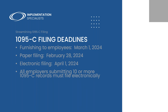The 1095-C filing deadlines for the 2023 tax year are quickly approaching. To furnish them to employees, the deadline is March 1st. Paper filing is due very shortly, and electronic filing is by April 1st — so you've got a little over a month there. The threshold mandating electronic rather than paper filing continues to drop: for the 2023 tax year, if you have to file 10 or more 1095-C records, you must file electronically rather than printing paper copies and mailing them in.